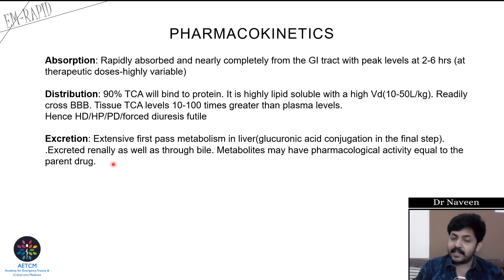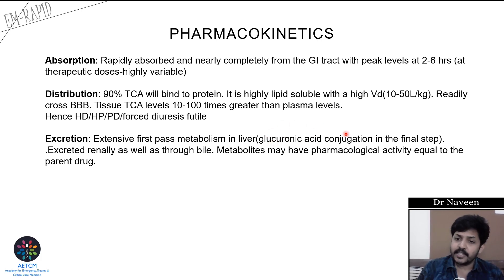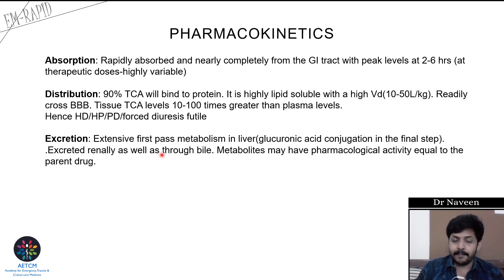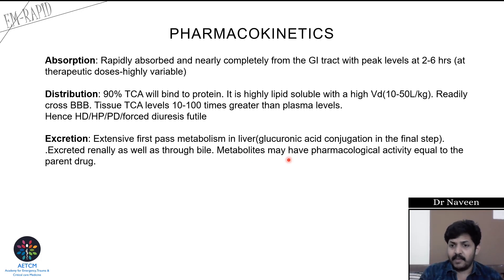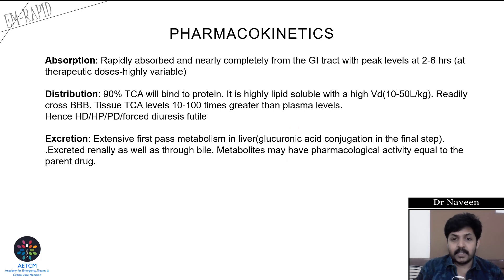Moving on to excretion: TCAs undergo extensive first-pass metabolism in the liver through various steps, with the final step being glucuronide acid conjugation. After metabolism, TCAs are excreted through urine as well as bile. Importantly, TCA metabolites have pharmacological activity almost equal to the parent drug, so TCAs stay in the blood for quite a long time and continue to exert their effects.